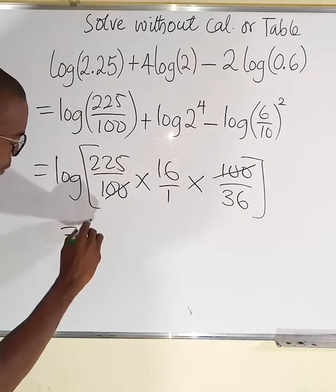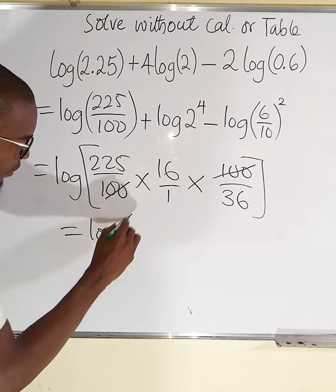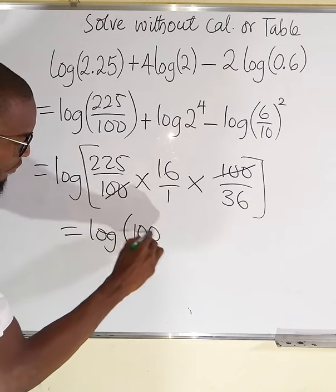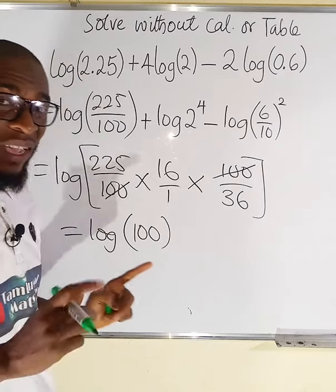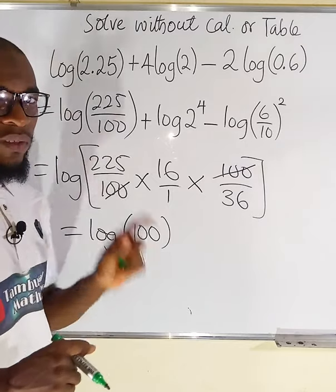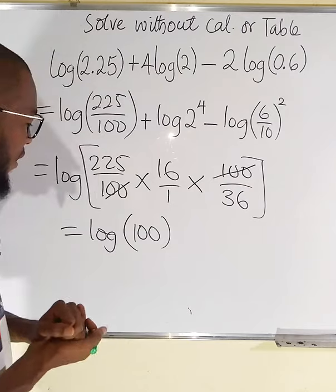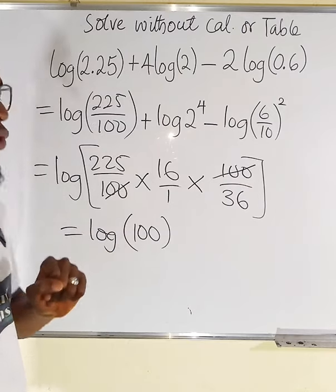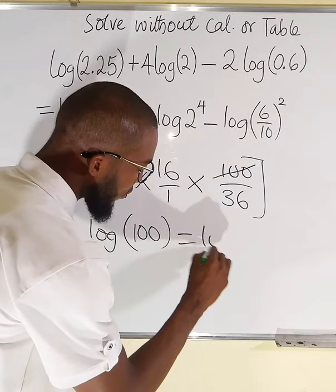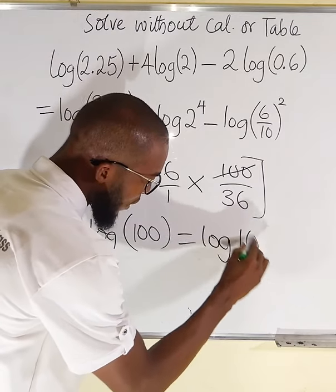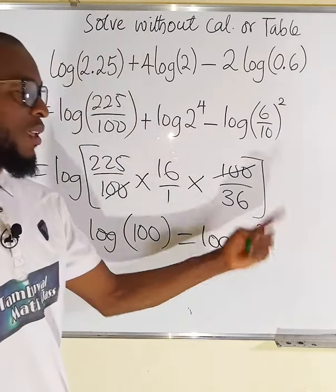So this is equal to log of 100. I remember that if you are dealing with a log without an assigned base, that log is in base 10. Take note of that. This 100 can be written as 10 power 2. So this is the same thing as log of 10 power 2. 10 times 10 is 100.